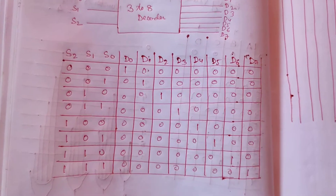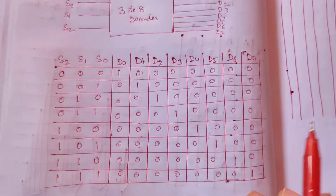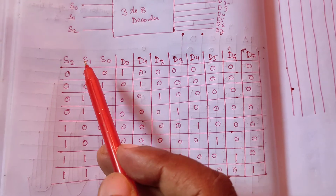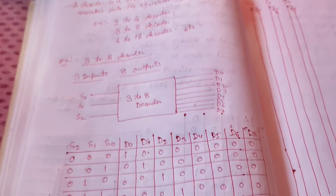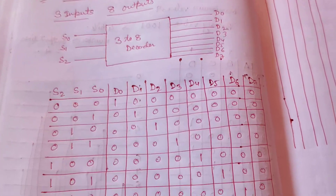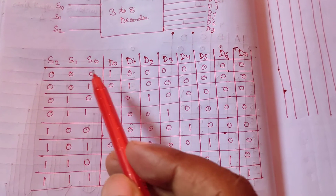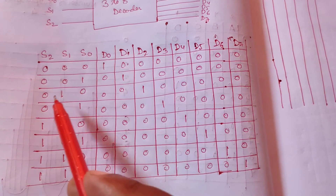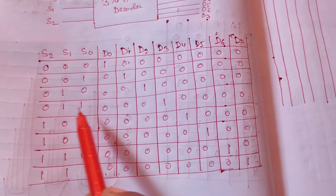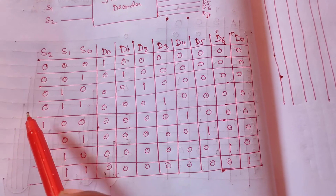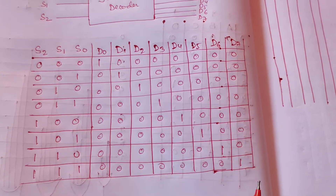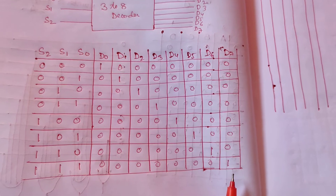Now we make the truth table. We take S0, S1, S2 as inputs. Then we write the octal table: 0 0 0, 0 0 1, 0 1 0, 0 1 1, and so on up to 7, giving us 8 rows.